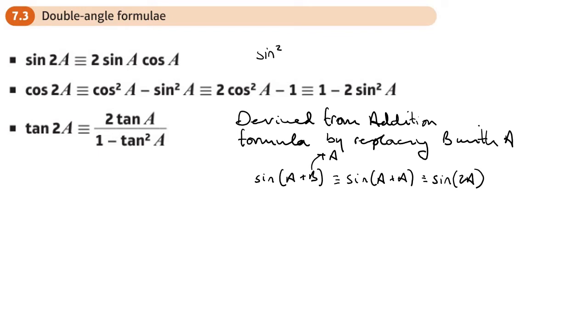This is the one that you get from the addition formulae, but if you use sine squared plus cos squared is one, you can use it to generate these two here. And the tan one again, the angle that you see over here gets doubled over here.